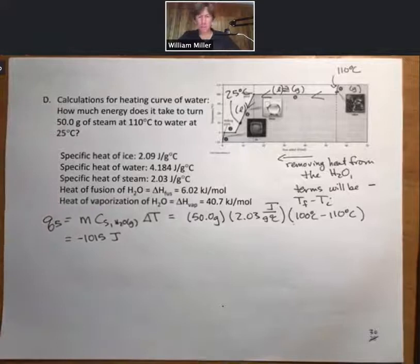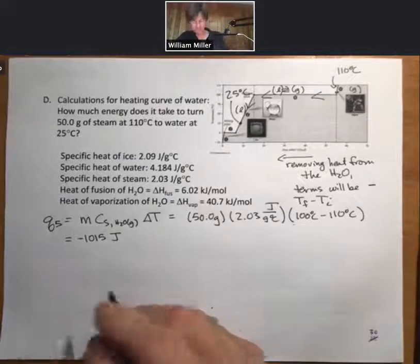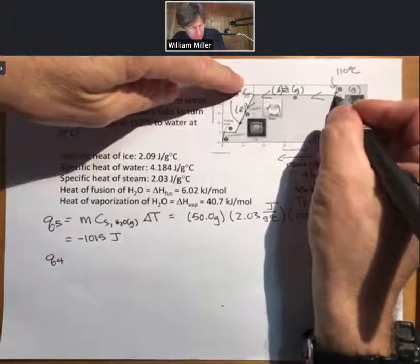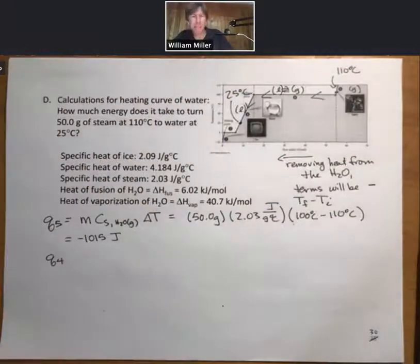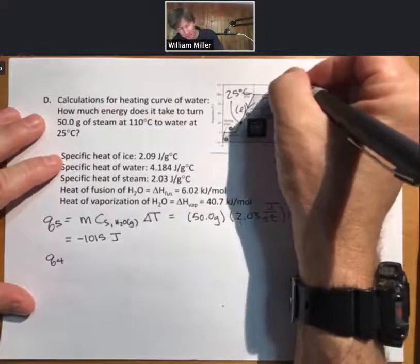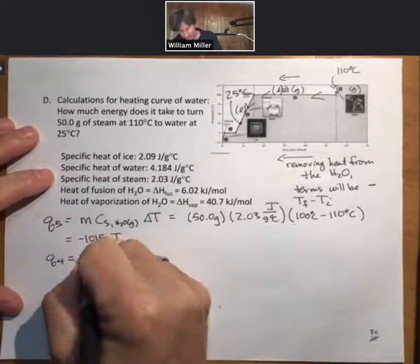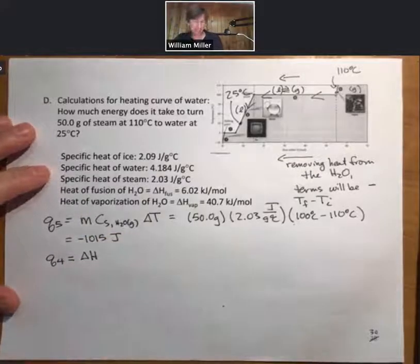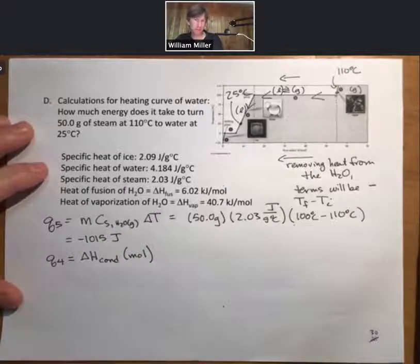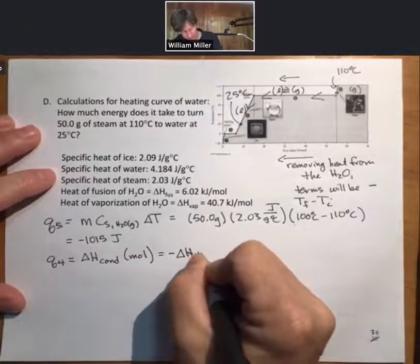100 minus 110 is just minus 10 times 2.03 times 50. I get minus 1015. Units of joules. I can see my grams cancel, my degrees Celsius cancel, I'm left with joules. Now I've gone from five down to the point for four. Now let's do a four calculation. This time I'm going to be going from gas to liquid, so I will write Q4 as delta H condensation.